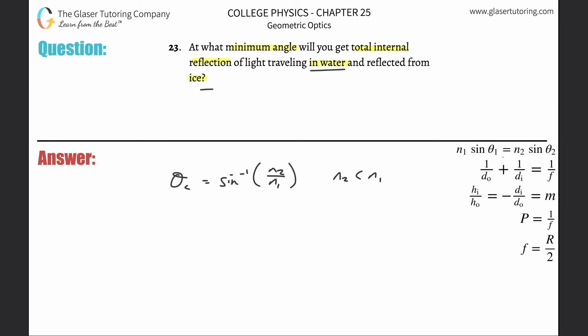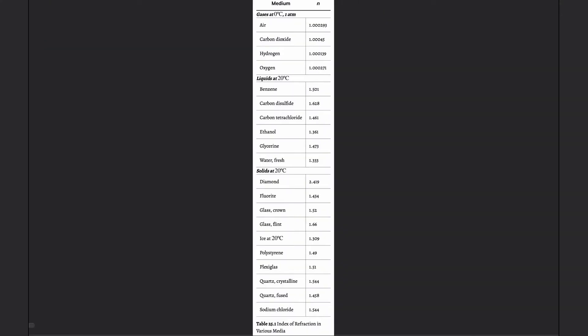So all you got to do, we got water and ice. So look up the values, right? So you go to your table, water, where are you? Water is about here, 1.333.